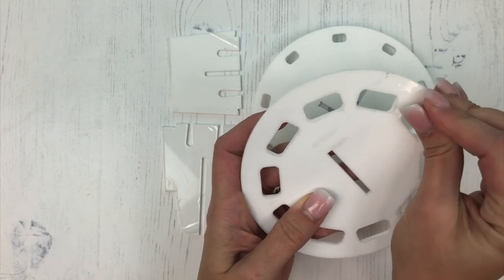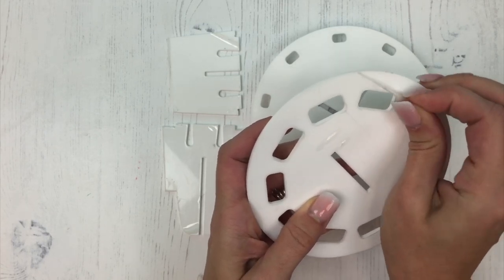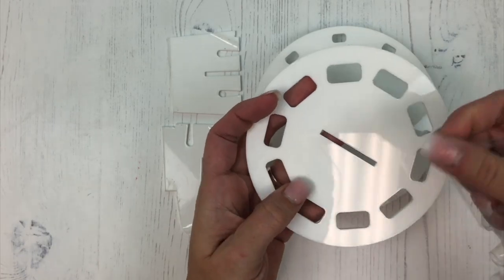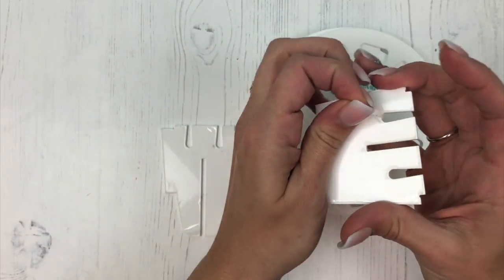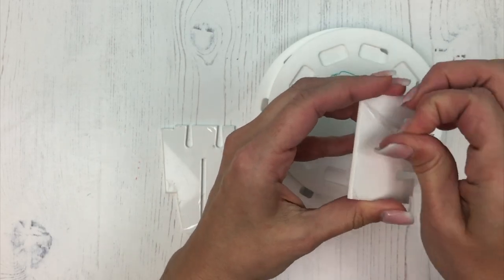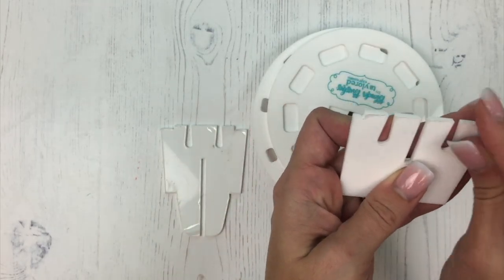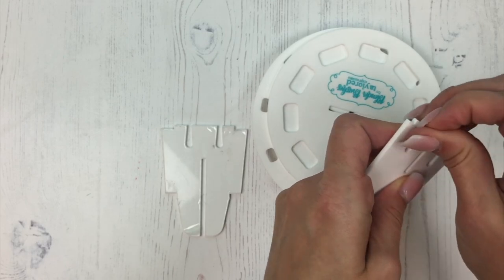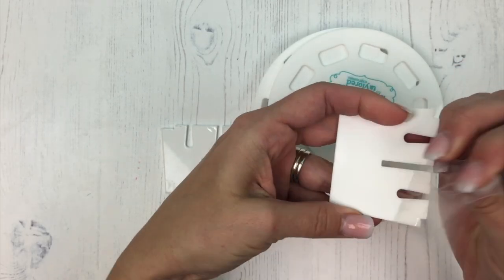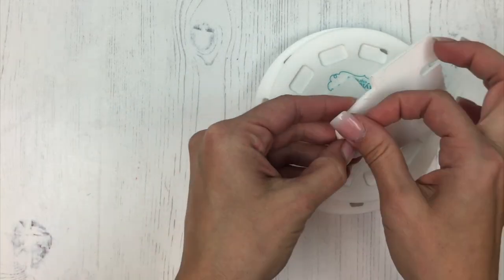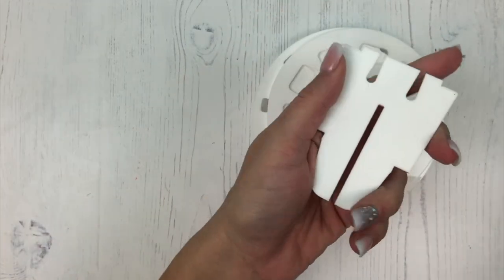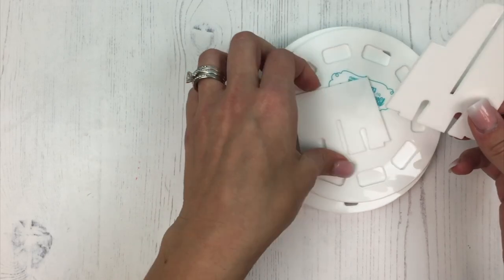The film should peel pretty easily, but if you want to use maybe a die pick or something just to scrape one little piece off of the edge. We'll go ahead and peel the film off of these sides. It is important to peel the film off before you start assembling because that's going to help it all click together a little bit better.